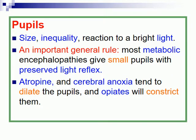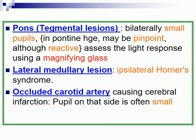Assess pupil size and inequality; reaction to light is an important general rule. Most metabolic comas give small pupils with preserved light reflex. Pontine lesions cause bilaterally small pupils — assess light response using a magnifying glass. Lateral medullary lesions may cause ipsilateral Horner syndrome, and occluded carotid artery causing cerebral infarction — the pupil on this side is often small.